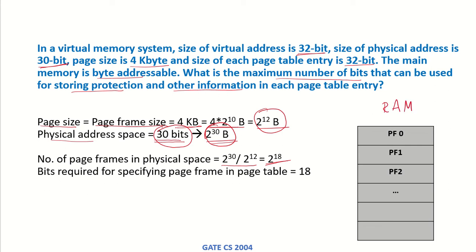If this is the RAM or physical memory, we will have page frame 0, page frame 1, through page frame 2^18 minus 1, since numbering starts from 0. To specify the page frame in the page table, since there are 2^18 frames, we will need 18 bits to represent the frame number in the page table.